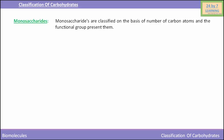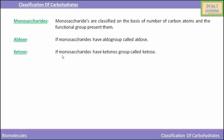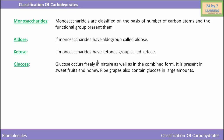On the basis of functional group, monosaccharides are classified into aldoses and ketoses. Aldoses are those monosaccharides which possess an aldehyde as their functional group, and ketoses are those monosaccharides which possess a ketone as their functional group.